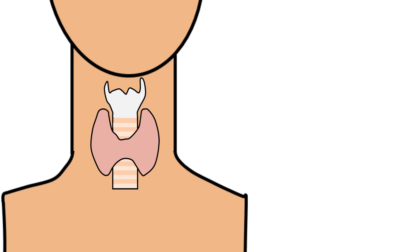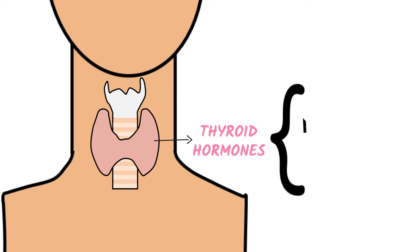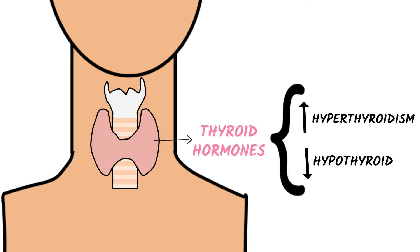Thyroid is a butterfly-shaped gland located in front of the neck. It releases thyroid hormones that control several body functions. Thyroid disease appears when the gland doesn't make the right amount of hormones. When it makes too much thyroid hormone, hyperthyroidism occurs, and when it makes too little thyroid hormone, hypothyroidism occurs.